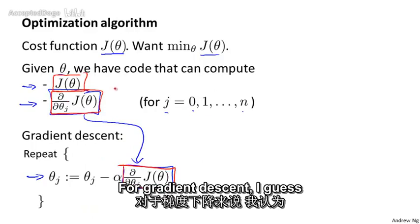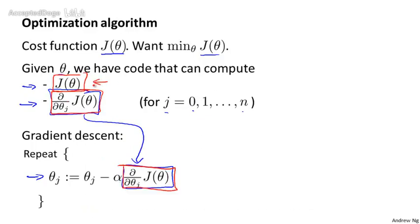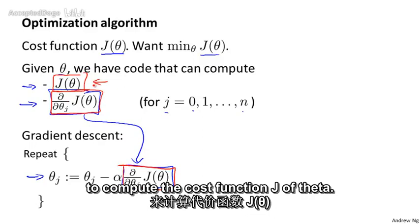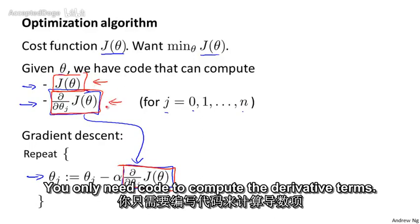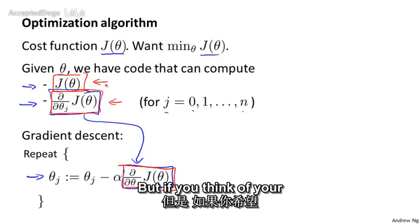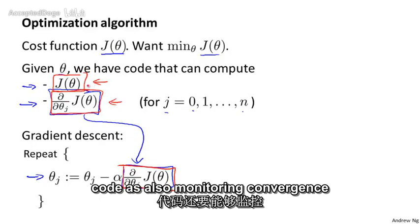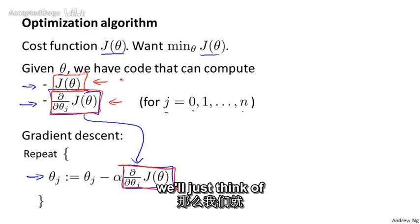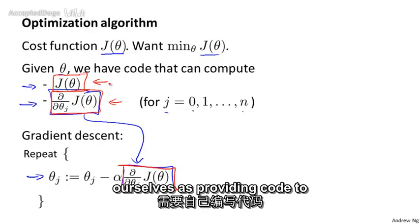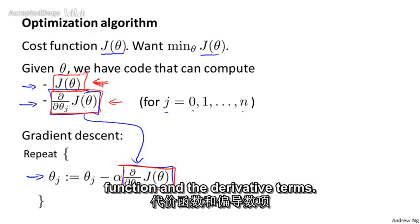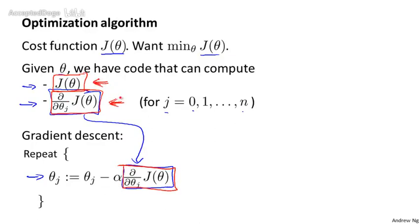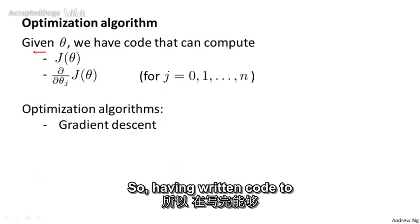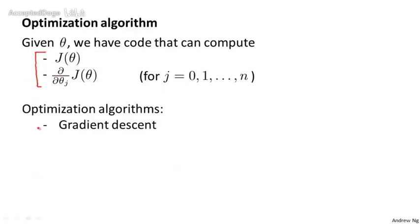For gradient descent, technically you don't actually need code to compute the cost function J of theta — you only need code to compute the derivative terms. But if you think of your code as also monitoring convergence, we'll think of ourselves as providing code to compute both the cost function and the derivative terms. So having written code to compute these two things, one algorithm we can use is gradient descent.